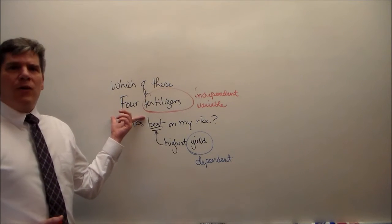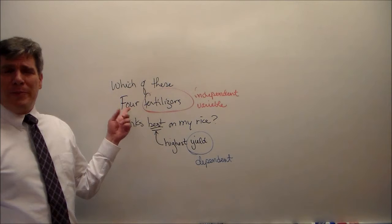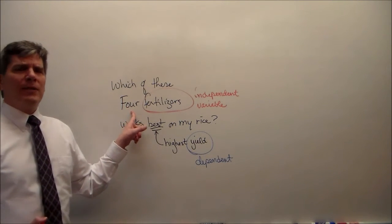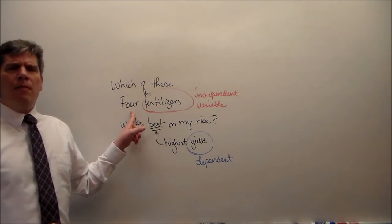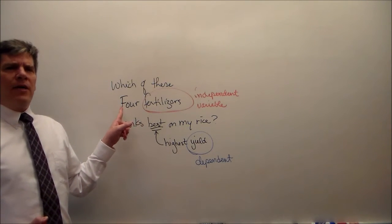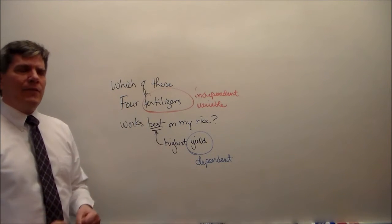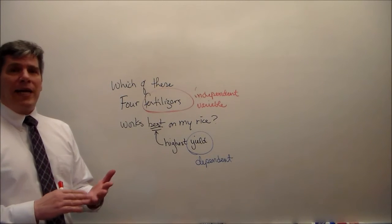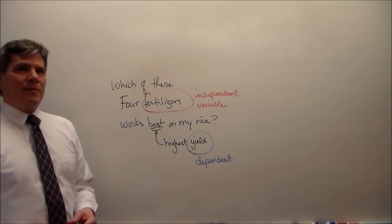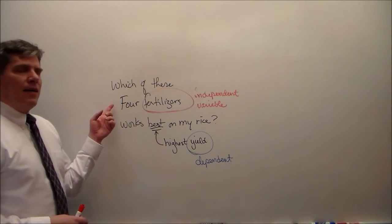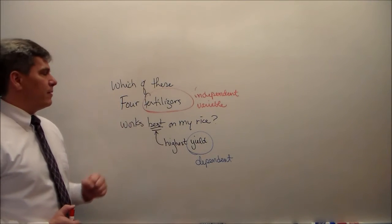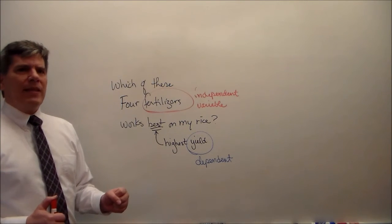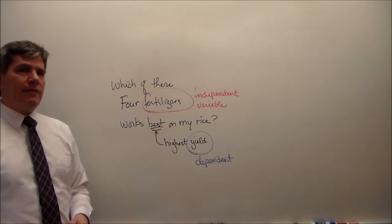The independent variable is categorical — not just categorical, but it has four categories, and it's nominal. It doesn't matter the order that we list these fertilizers: A, B, C, D or A, D, C, B. The order doesn't matter. With an independent variable being nominal and the dependent variable being numeric, that tells me I should be using some sort of analysis of variance.